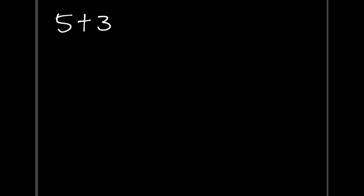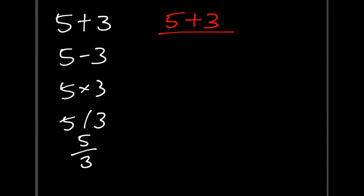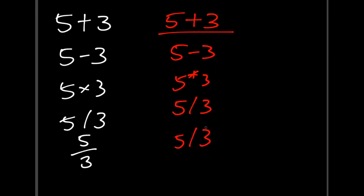We're going to look at Python using math. Consider a simple equation: 5 plus 3. If you're new to Python, you'll be quite relieved to hear that it's written exactly the same way. A few more examples: 5 minus 3, 5 multiply by 3, 5 divided by 3 — in Python it's 5 minus 3, 5 asterisk 3, 5 divided by 3. Quite simple.